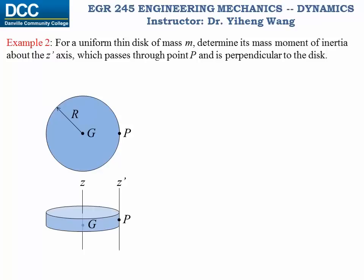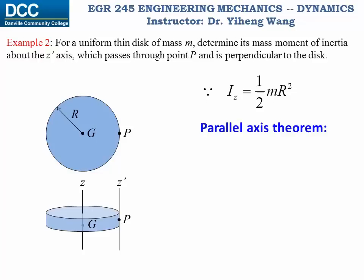Let's look at a similar example. For the same disk, we now need to calculate the mass moment of inertia about a z-prime axis that is also perpendicular to the disk but passes through a point on the edge. Since z-prime is parallel to z, and we already know I_z = one-half m·R², we apply the parallel axis theorem. The perpendicular distance between the two axes is R, therefore I_z-prime = one-half m·R² + m·R² = three-halves m·R².